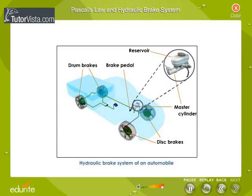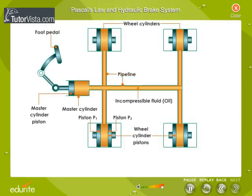Here you can see the hydraulic brake system of an automobile. It consists of a pipeline containing fluid, one end of which is connected to the master cylinder fitted with a piston attached to the foot pedal. The other end of the pipeline is connected to the wheel cylinder having two pistons P1 and P2 attached to the brake shoes. The area of cross section of the wheel cylinder is greater than the area of cross section of the master cylinder.